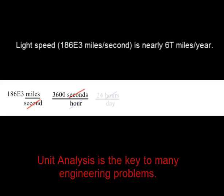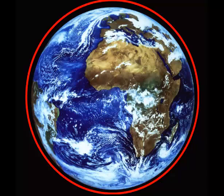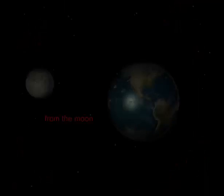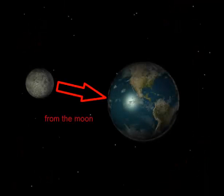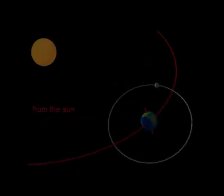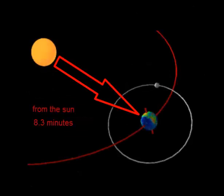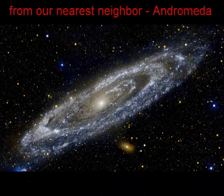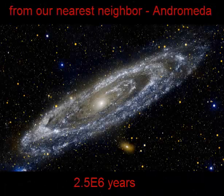Unit analysis is the key to many engineering problems. Light will travel around the Earth in a tenth of a second, from the Moon in 1.3 seconds, from the Sun in 8.3 minutes, and from the center of our galaxy in 27,000 years.